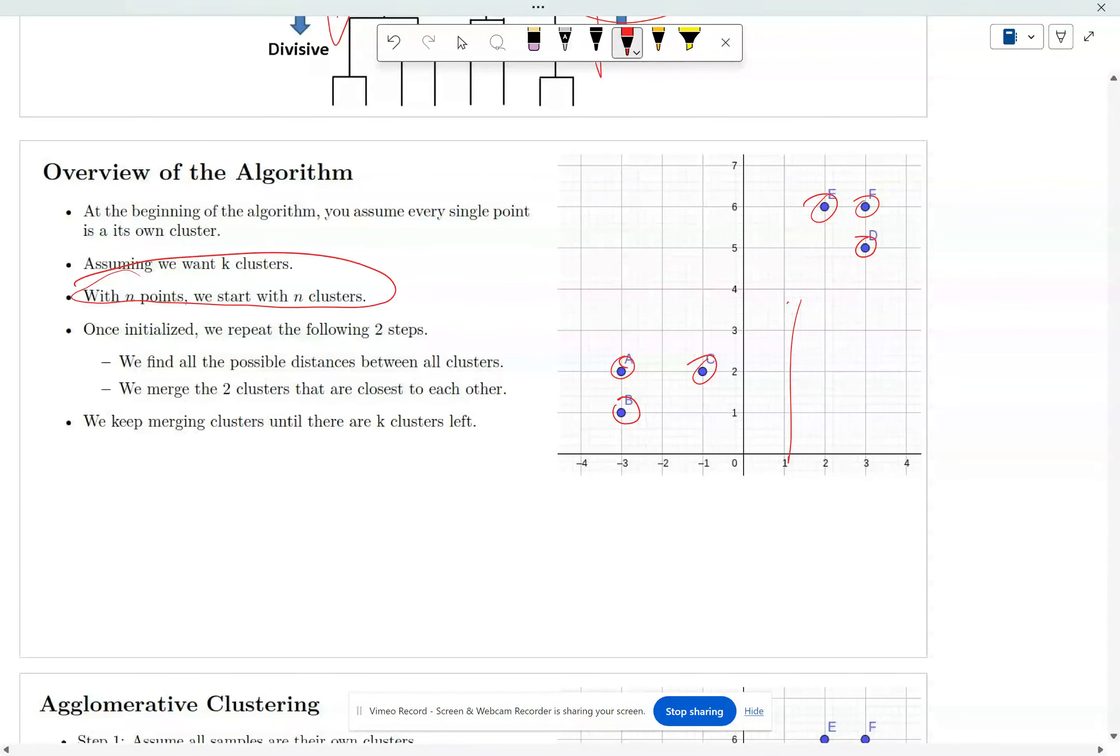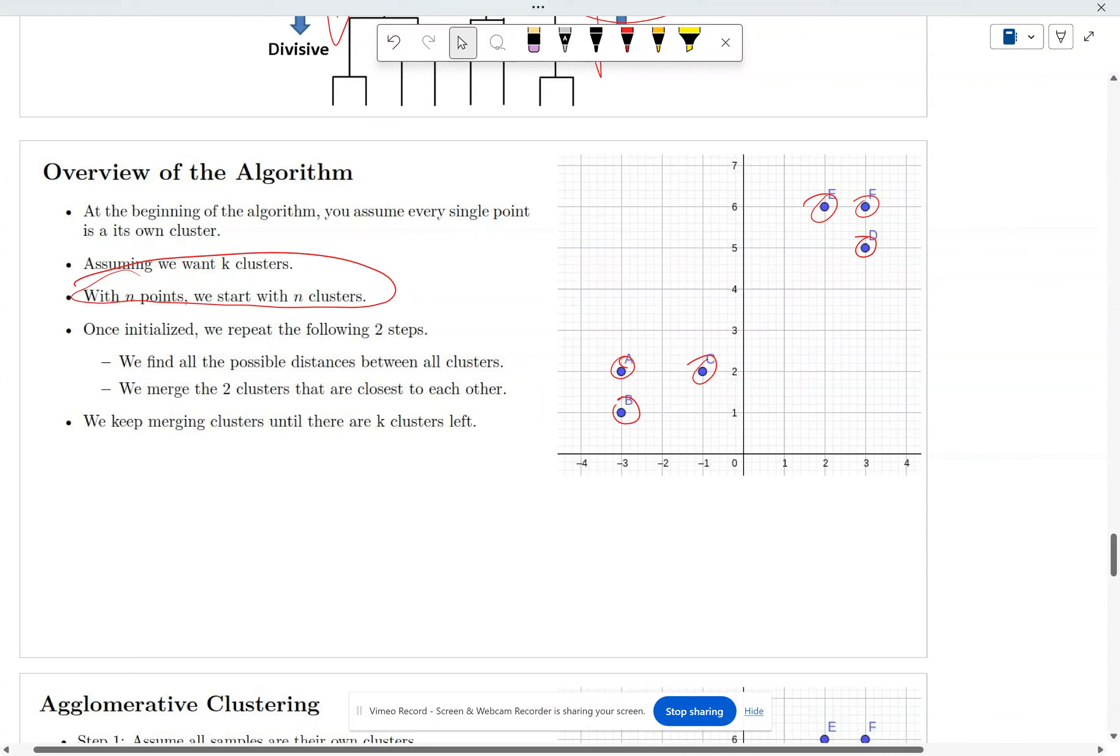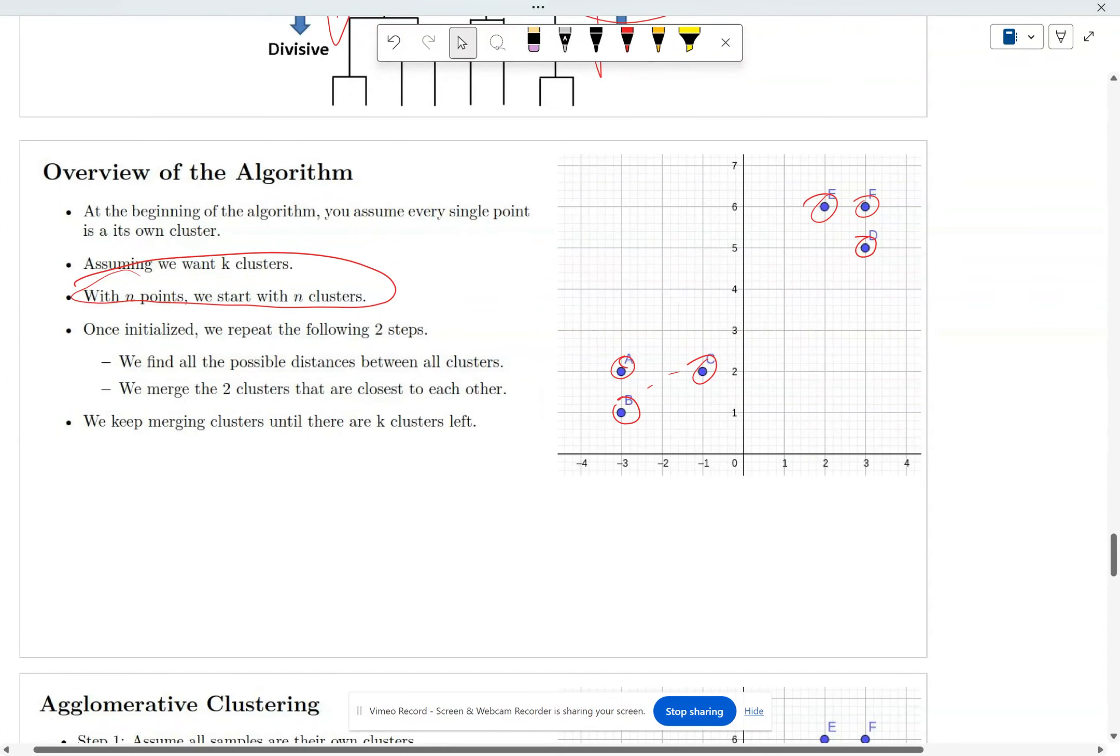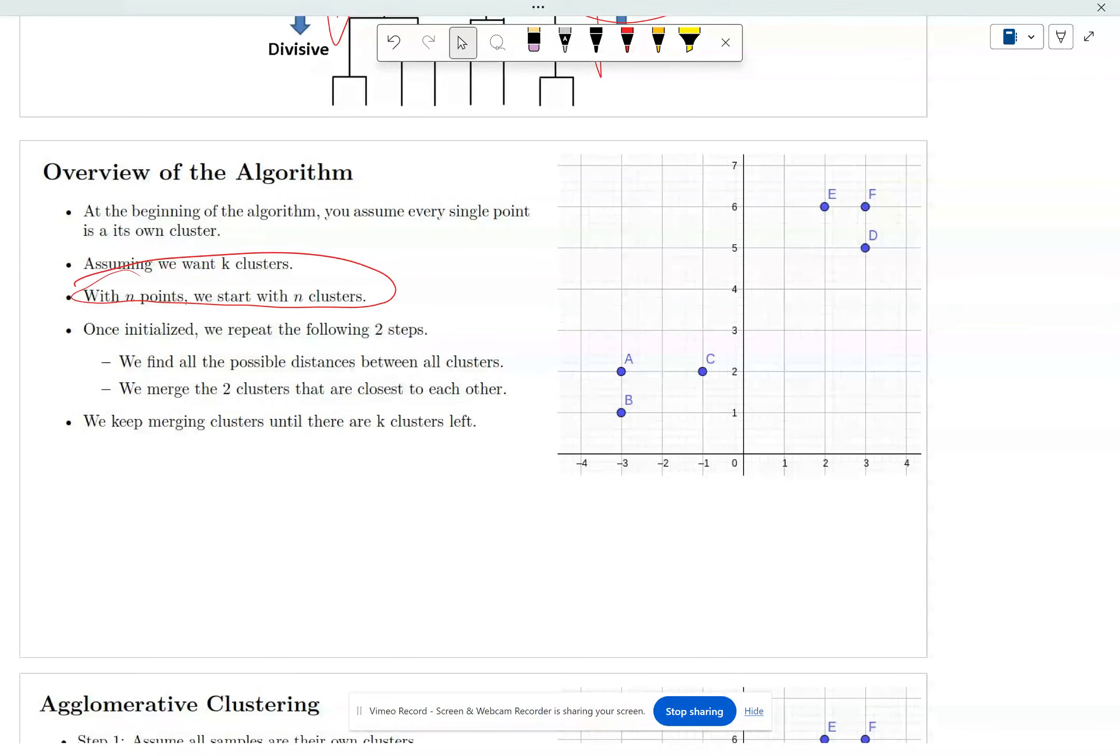So once you initialize such that every single point is a cluster, we find all possible distances, every possible distance, and then identify the two points or in this case two clusters that are closest to each other. So over here they have a distance one, they have a distance one, they have a distance of one.